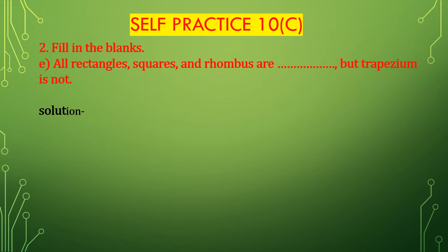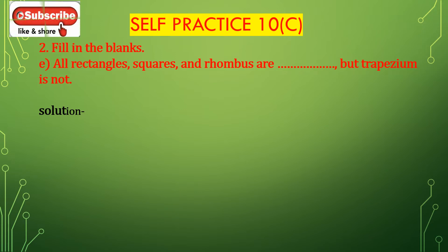Now bit E: all rectangles, squares, and rhombuses are dashed but trapezium is not. All rectangles, squares, and rhombuses are parallelograms but trapezium is not. So the answer is parallelogram.